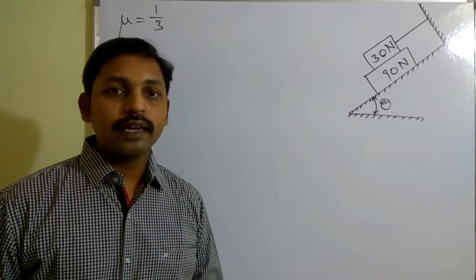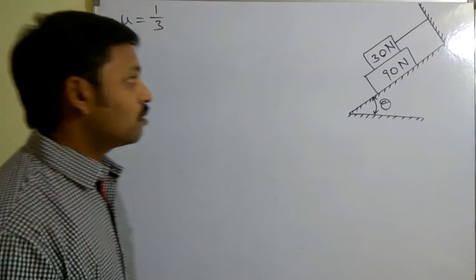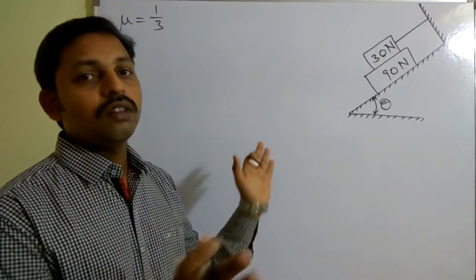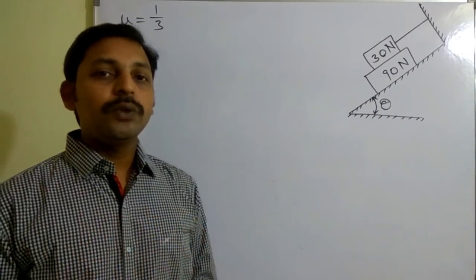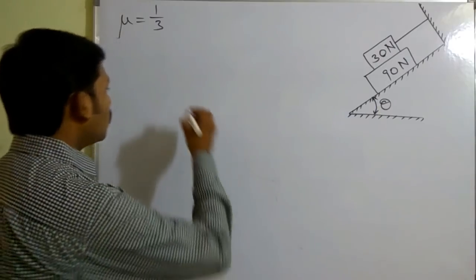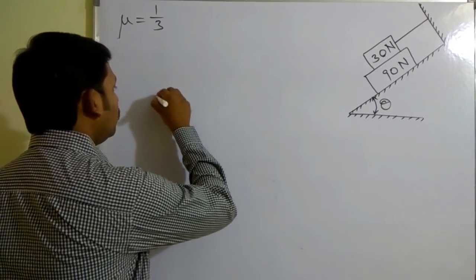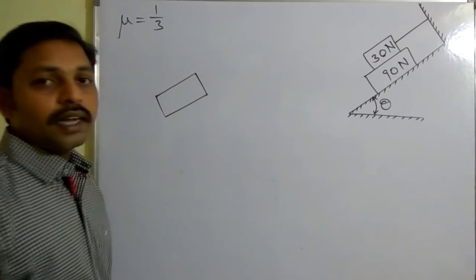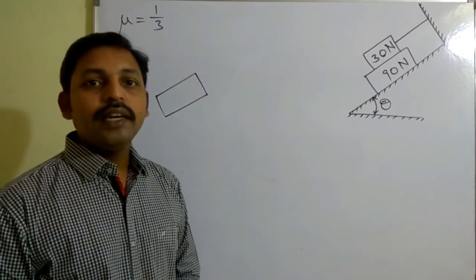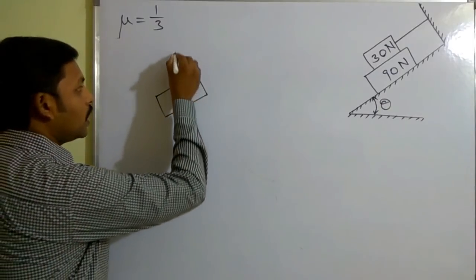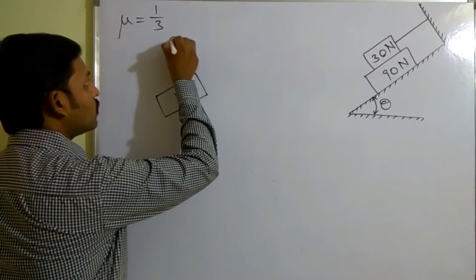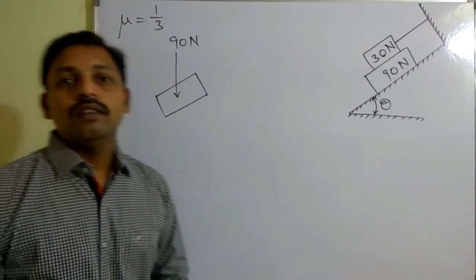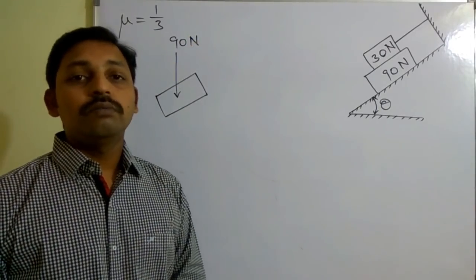First I will consider the free body diagram of the 90 Newton block. To draw the free body diagram, I need to remove all the surface contacts and draw that block separately. So this is the 90 Newton block.